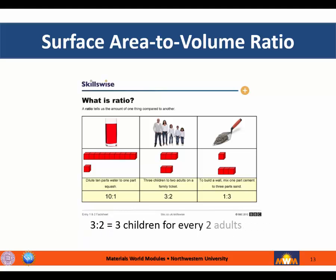The ratio 3 to 2 equals 3 children for every two adults. Finally, the ratio 1 to 3 means one part of cement is to be mixed with three parts of sand.